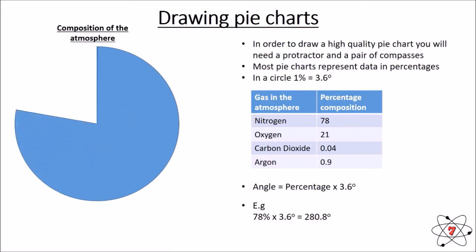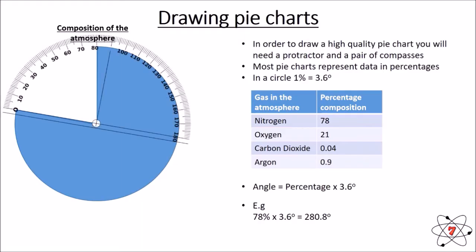We're now going to do this again for oxygen. So, in this case, we need to multiply 21 by 3.6. This is going to give us the percentage of our pie for oxygen. When we've worked this out, we mark it on in the same way we did for nitrogen.